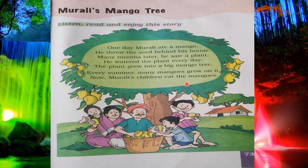Now Murali's children eat the mangoes. Here you can see there are three children of Murali and they are all enjoying the mangoes — very happy, enjoying these tasty and big mangoes. This is the story of Murali and his mango tree, which is now completed.